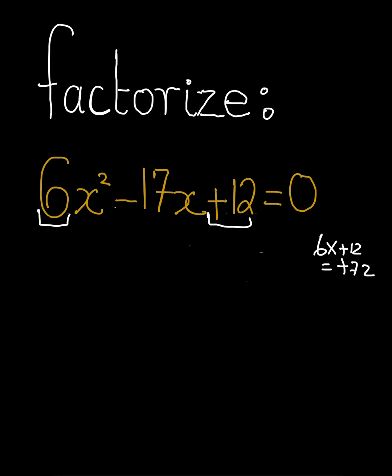Now, we need two numbers. Remember, please kindly listen carefully. We need two numbers. When we multiply them, we get positive 72. But those two same numbers, when we add those two same numbers together, we're going to get minus 17.